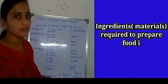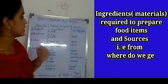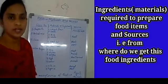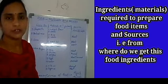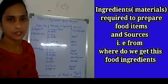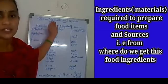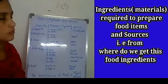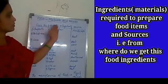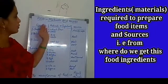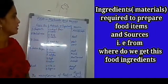Welcome to the second part of the food lesson. In the previous class we had seen about what is food, why do we need to eat food, and different types of food items. In this class we will see about what are the materials and sources of this food. So we shall see a list: food items, materials or ingredients required to prepare each food item, and the sources of those materials.